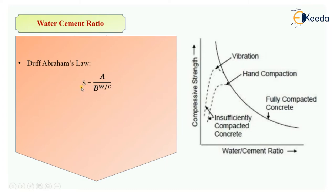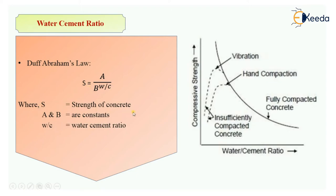Now let's see Duff Abrams' Law empirically. The formula is: S = A / B^(wc), where S is the strength of concrete, A and B are constants, and wc is the water-cement ratio. So strength equals A divided by B raised to the power of wc — this is the empirical equation given by Duff Abrams.